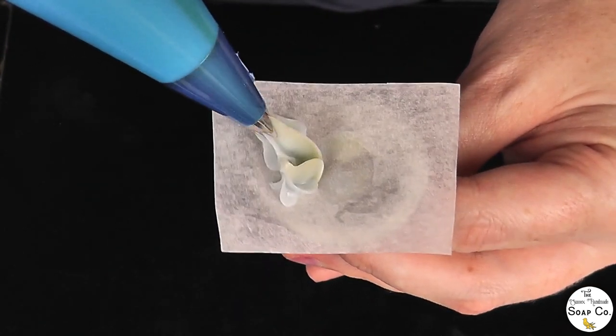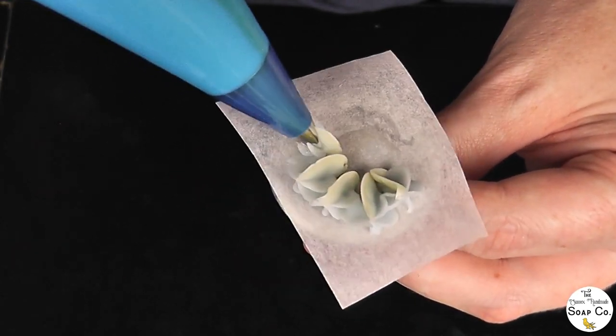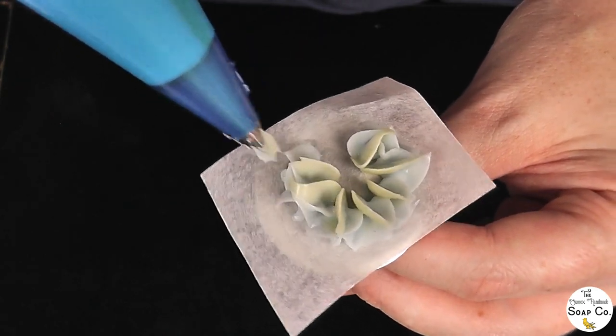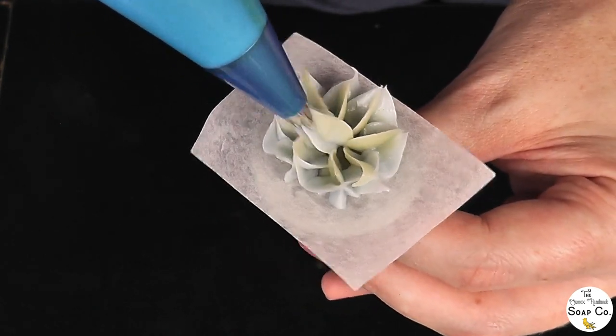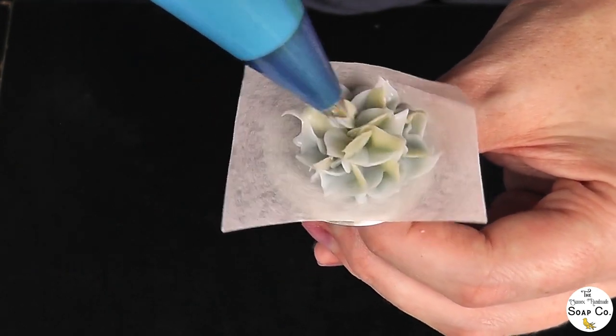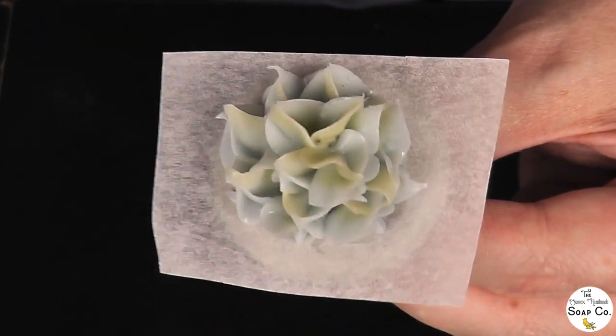And again just applying the pressure as I go round in a circle and releasing that pressure when I'm happy with how the petals are looking and again I am just squeezing little petals into the centre and just building up the design like so and I think that looks really pretty and really effective.